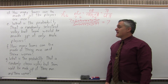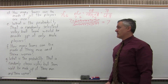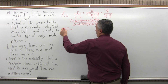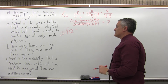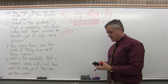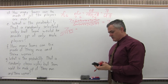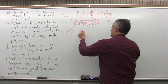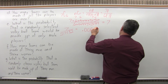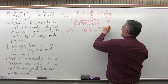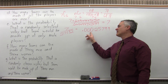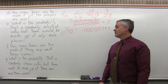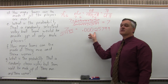Part E: what is the probability that a randomly selected volleyball team would be made up of only male players? There are 7 teams that are only male players out of 27,132 teams possible altogether. Dividing: 7 divided by 27,132 is approximately 0.000258. So it's almost impossible — very, very low probability that you would find a team of only men. It could happen, but almost impossible.